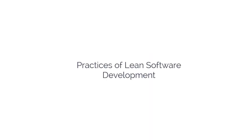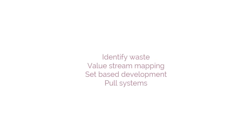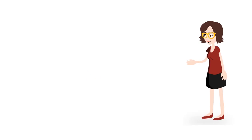Now we will look at the practices of lean software development. The list of lean software development practices are: Identify waste, value stream mapping, set base development, pull systems, queuing theory, motivation, and measurements.